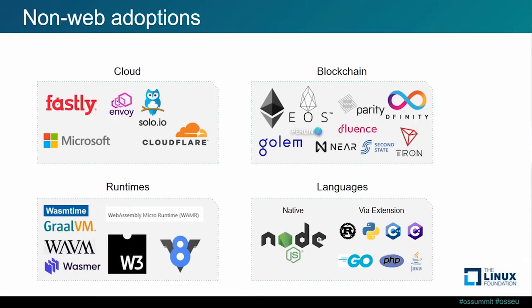To run WebAssembly outside the browser, you need runtimes with different characteristics — some optimized for cloud-based workloads, some for IoT. There's also the category of extending languages themselves — not just compiling to WebAssembly, but extending the language's capability. Node.js has first-class support to pull in WebAssembly modules and add new capabilities without dealing with native bindings and cross-compilation challenges. Other languages can be extended the same way through third-party extension frameworks.